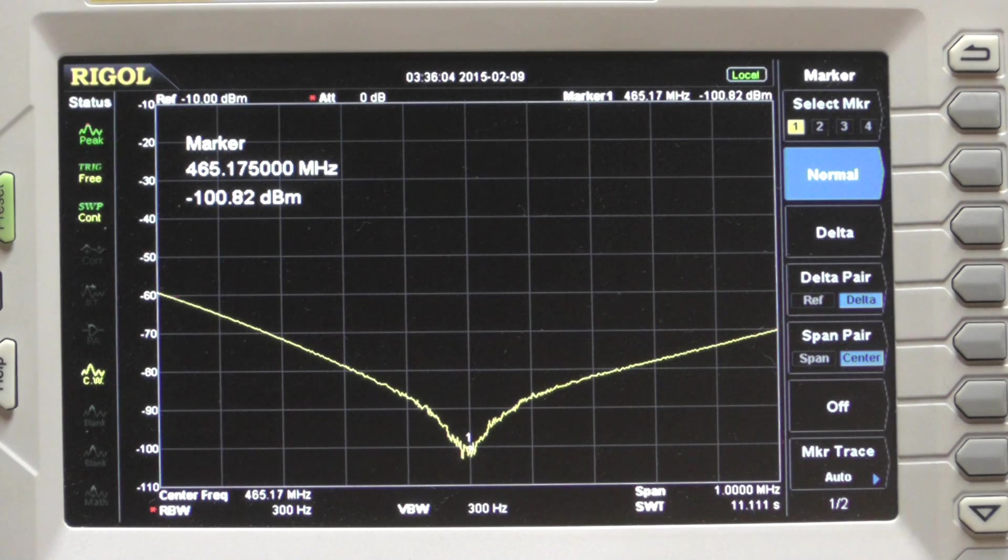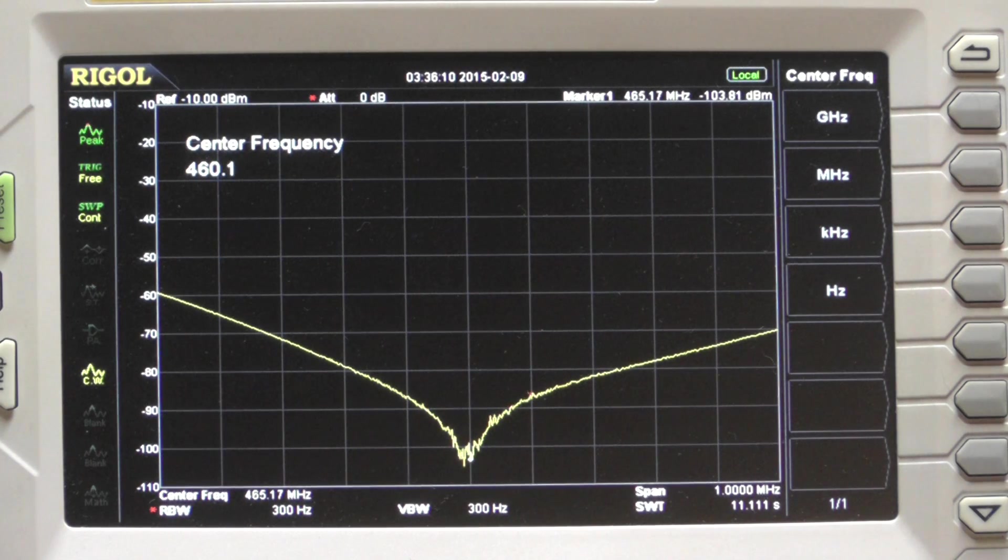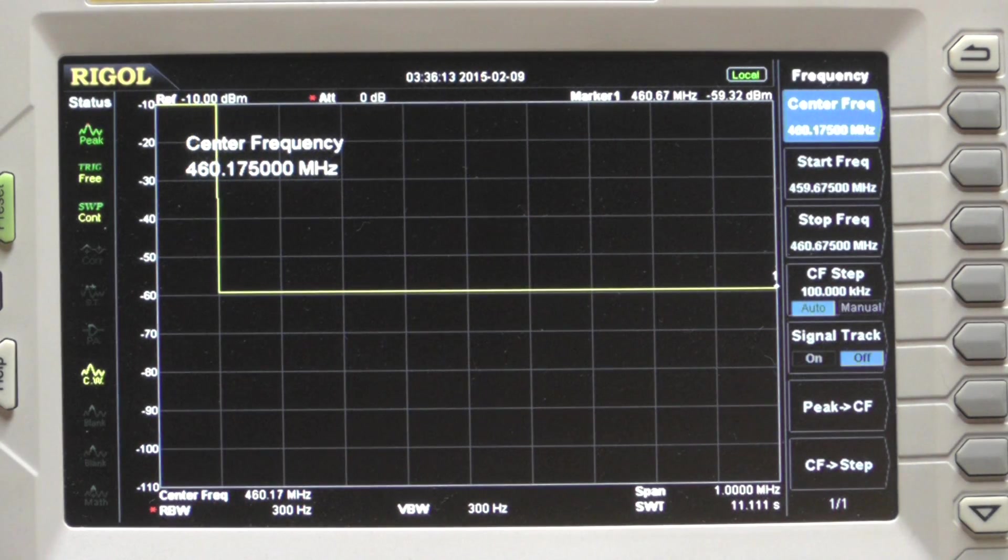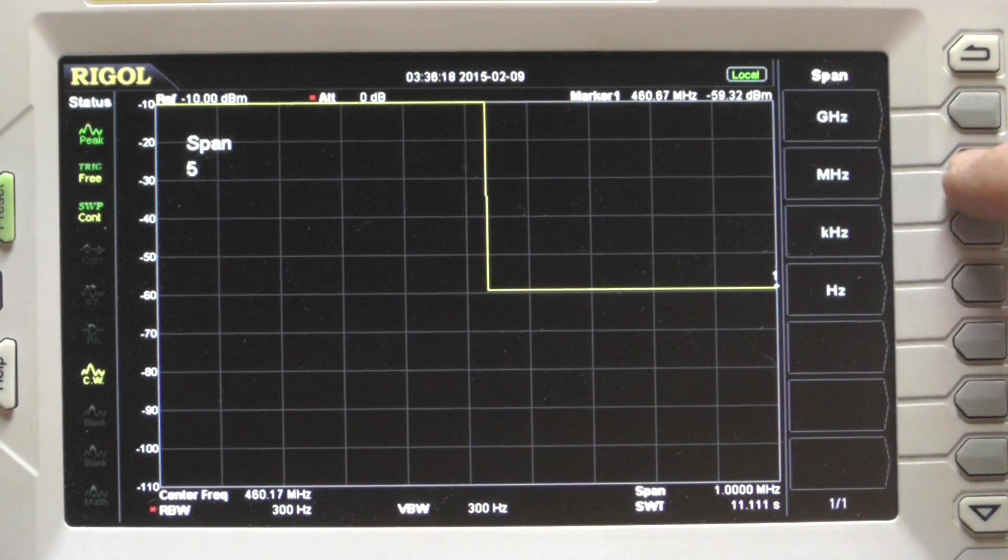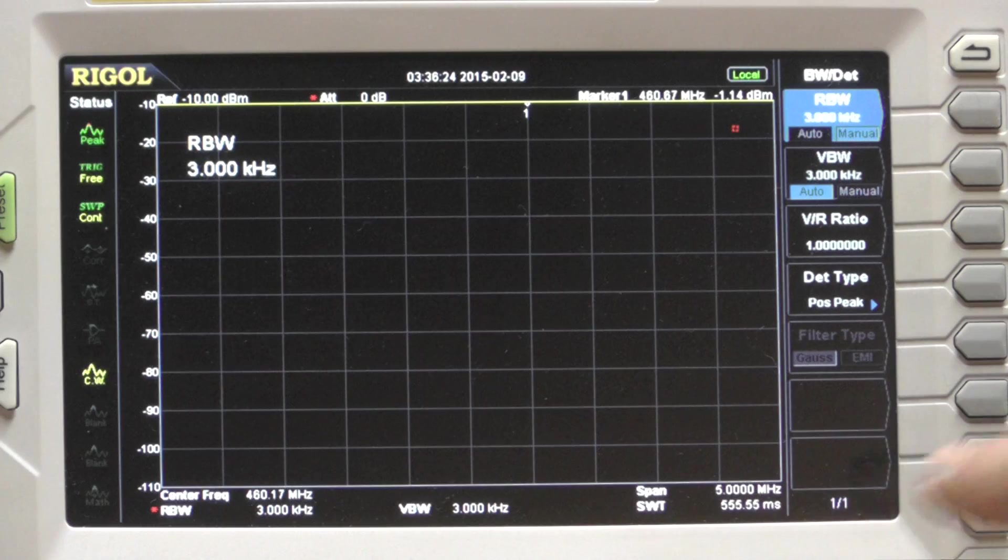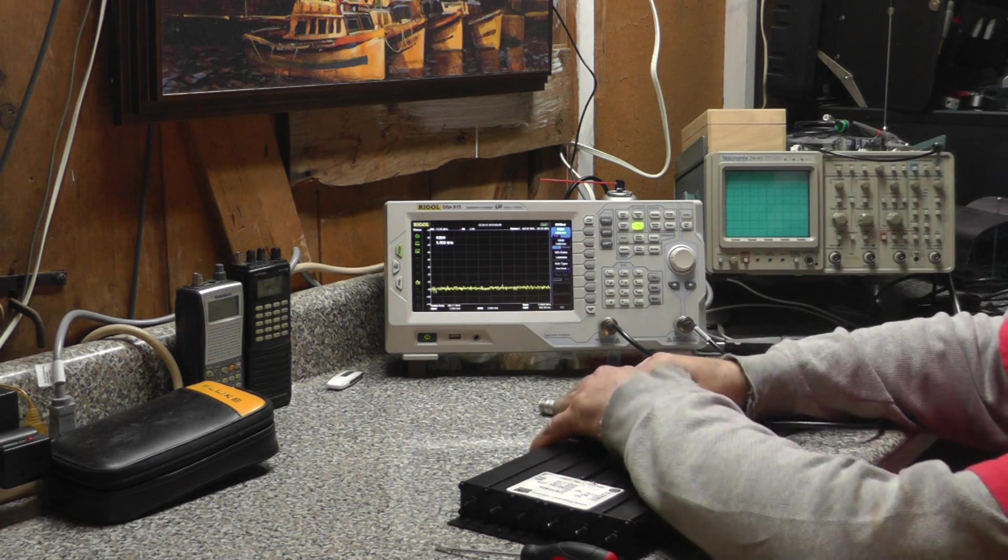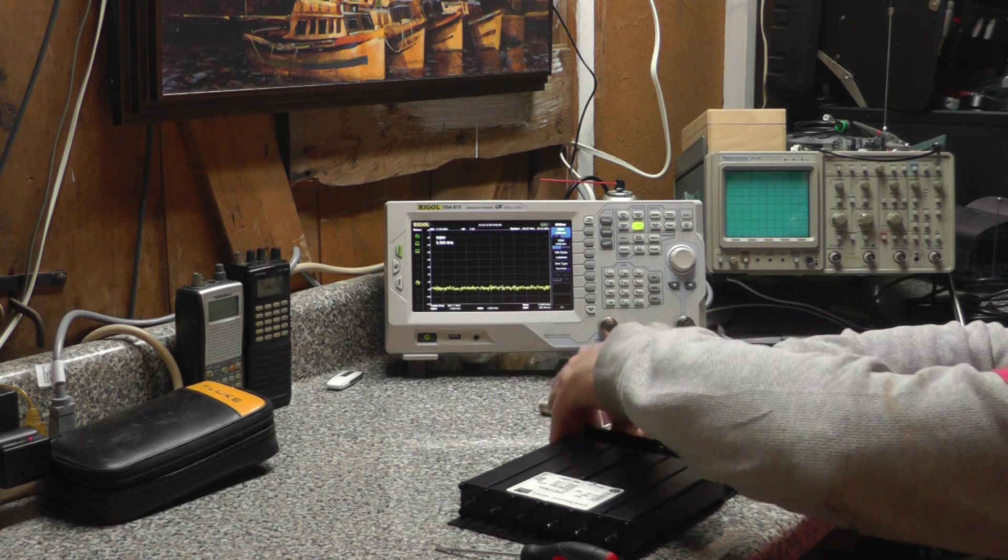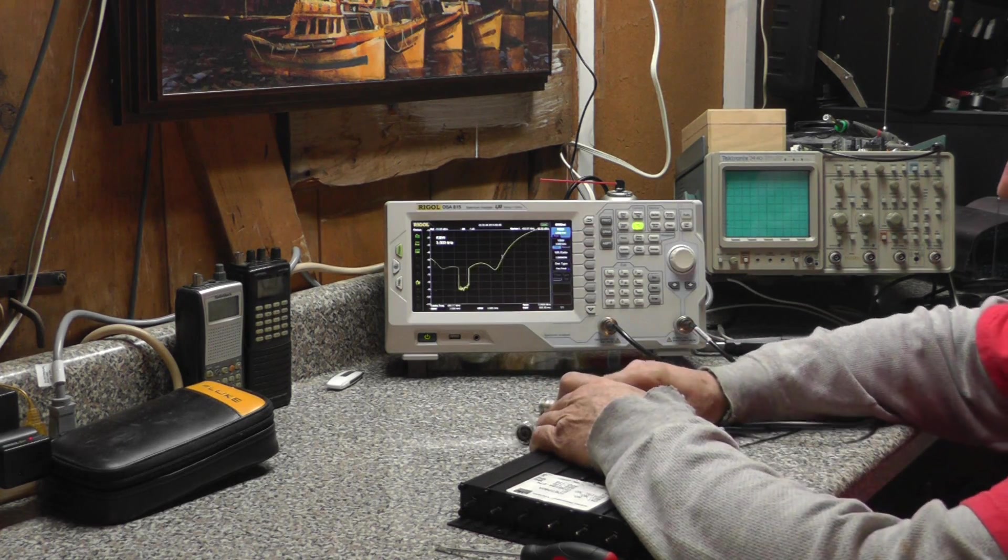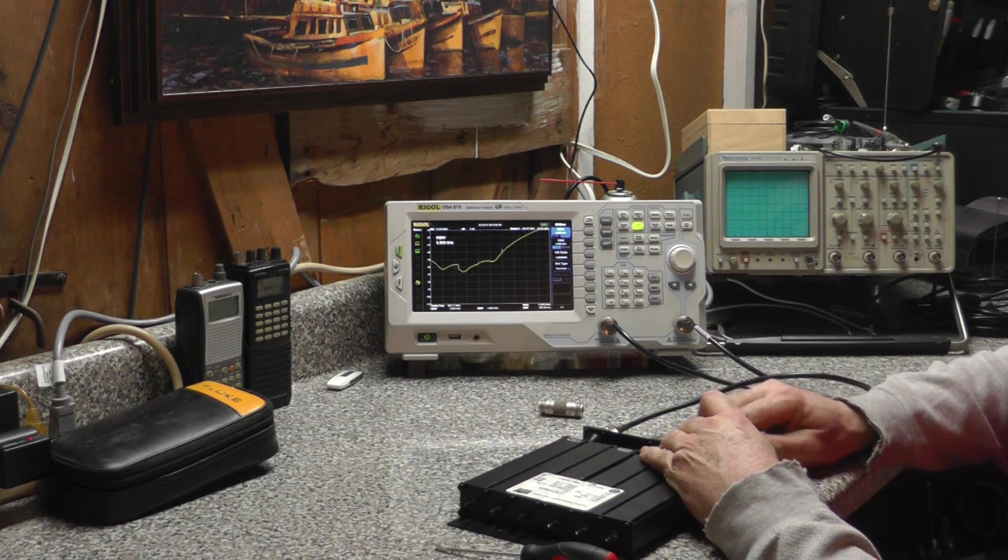The next thing we're going to do is put a new center frequency in here of 460.175 megahertz, which is our receive frequency, and take our span up to five megahertz. Go to resolution bandwidth and increase that, so I have a reasonable amount of sweep time here. That's a half second. And now I'll move my spectrum analyzer input over to the transmit side. We're going to notch the receive frequency out of the transmit side, including this impedance matching device back on this port.